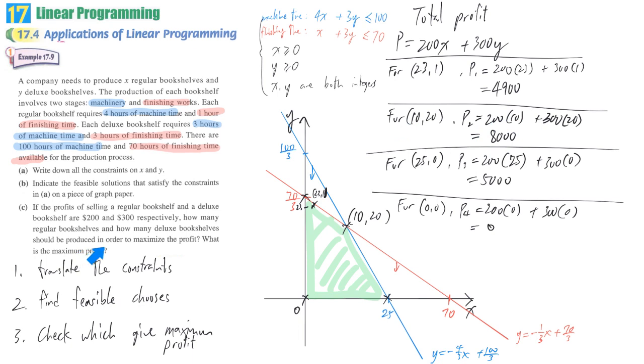So to answer how many regular bookshelves we should produce, we should produce 10 regular bookshelves. And we should produce 20 deluxe bookshelves. And in this case, our total profit, that means the maximized profit, is $8,000. So that's what we have to do by learning linear programming.